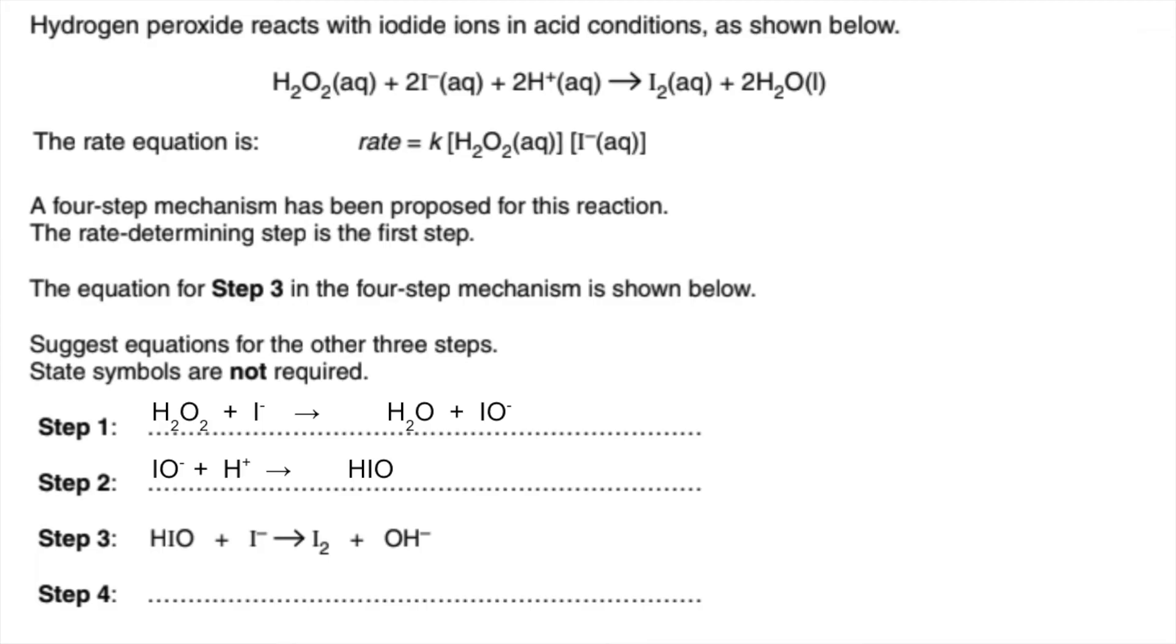Now last step we just need to think what have we got, what do we still need? So we've got an H2O2, we've got two I-, we've only got one H+ so far so we're going to need one of those.